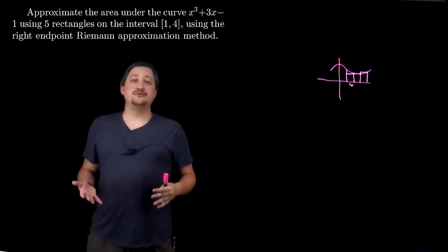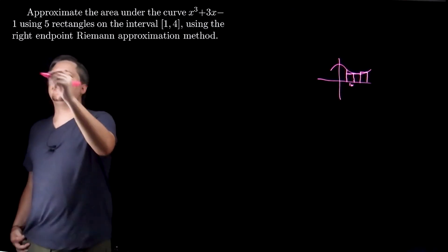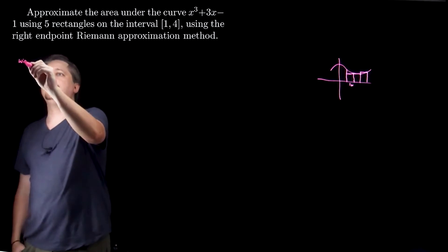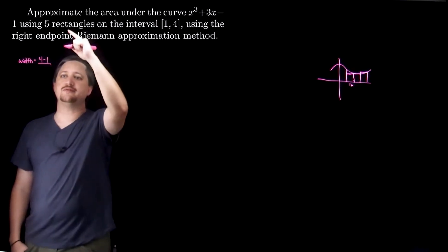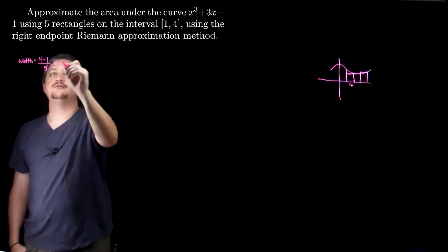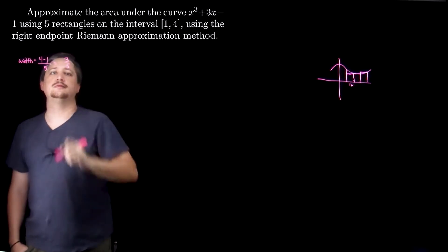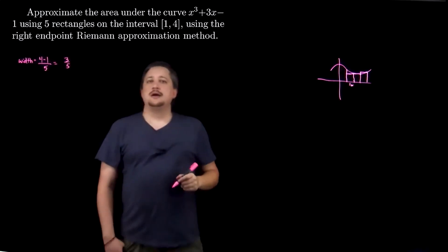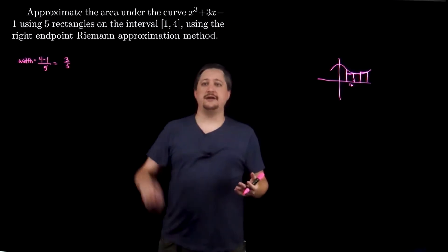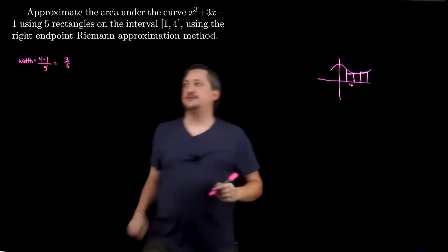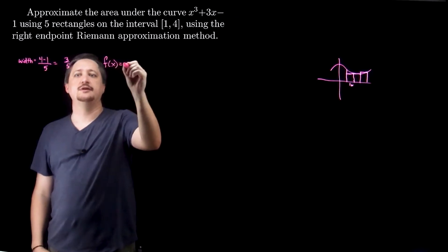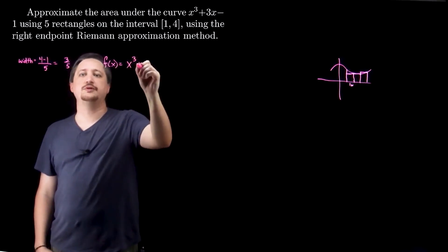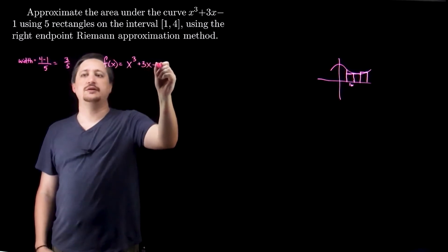First thing I'm going to do is figure out what the width is. I have the interval 1 to 4, so my width of each rectangle is 4 minus 1 divided by the number of rectangles, which is 5. So it's 3 fifths. And I know my function — my f of x is x cubed plus 3x minus 1.